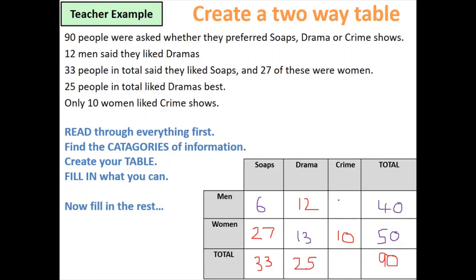The final two boxes are men who like crime and the total who like crime. 6 add 12 is 18, so 40 take away 18 is 22 — meaning 22 men liked crime. Adding vertically: 22 add 10 is 32 in total for crime. The final completed table is now on the slide.